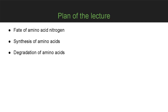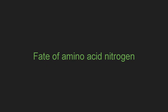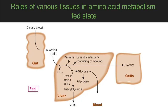Fate of amino acid nitrogen: in the fed state, amino acids released by digestion of dietary proteins travel through the hepatic portal vein to the liver, where they are used for the synthesis of proteins, particularly blood proteins such as serum albumin. The carbon skeletons of excess amino acids are converted to glucose or triacylglycerols.